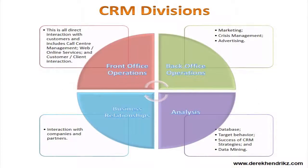Operational CRM consists of three parts: front office operations, back office operations, and business relationships, whereas the intelligence part is your analysis. The front office operations is the most important part of CRM — this is where customer meets organization. All direct interaction, whether the customer calls a call center, uses online service, or there's direct customer interaction, is a front office operation. That's the high-risk part of CRM — that's where the rubber meets the road.